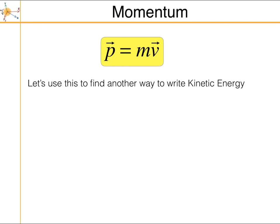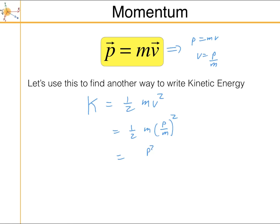We can rewrite kinetic energy in a certain way using momentum. If p equals mv, then v equals p over m. Starting with KE equals one half mv squared and substituting for v, we get one half m times (p/m) squared, which simplifies to p squared over 2m. It's another way to look at kinetic energy, and we'll see that again soon.